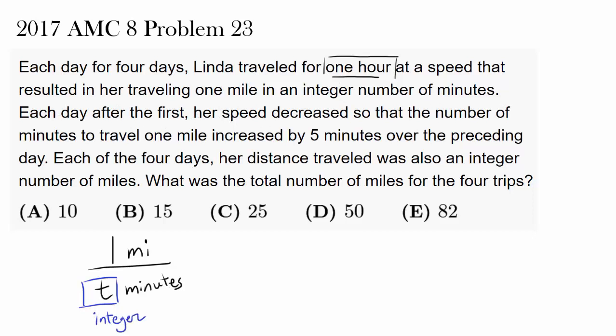Each day after the first, her speed decreased, so that the number of minutes to travel 1 mile increased by 5 minutes over the preceding day. So the number of minutes it's taking her to go 1 mile is increasing by 5 each day.